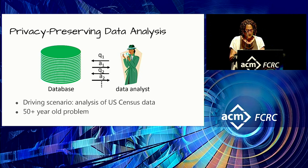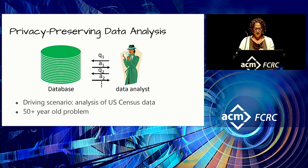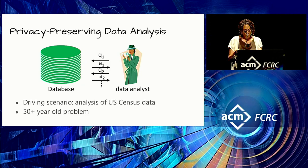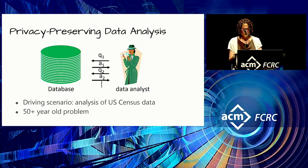Inspired by conversations with philosopher Helen Nissenbaum and in collaboration with my then-intern Adam Smith, we held the US Census in mind as a driving scenario. The Census has a legal mandate for privacy. It's the analysis of the people's data to allocate the people's resources for the benefit of the people. The uses of census data are really important: allocation of representatives to the US House of Representatives, allocation of hundreds of billions of dollars in federal money, redistricting, and enforcing voting rights legislation.